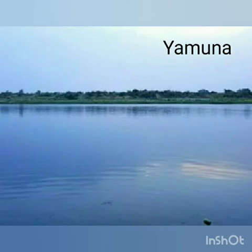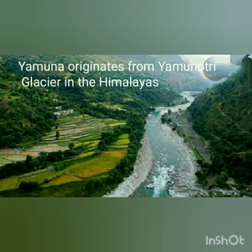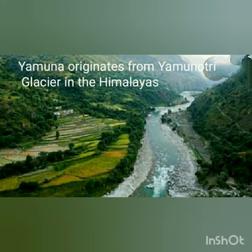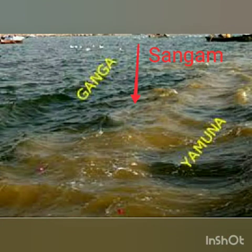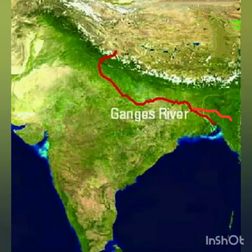The river Yamuna, which originates in the Himalayas from the Yamunotri glacier, is also a Ganga tributary and waters the northern plains. It joins the Ganga at Allahabad. The place where these rivers meet is called a Sangam.